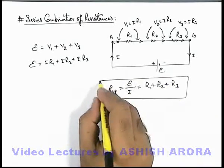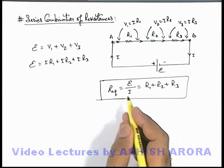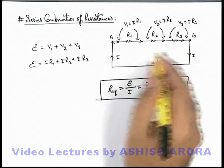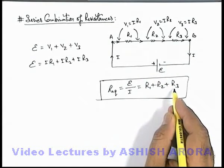So always remember that in case of series combination, the equivalent resistance of the combination is given by the sum of the individual resistances of the combination.